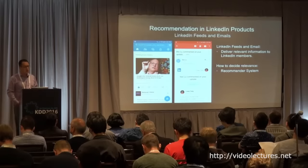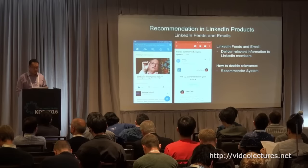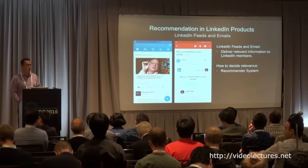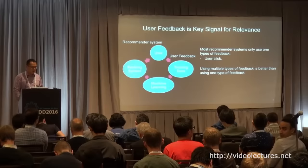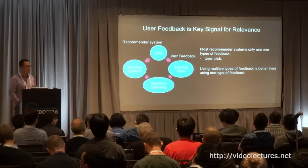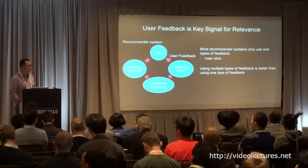Recommendation is part of the LinkedIn products. For example, here is the LinkedIn newsfeed and the LinkedIn email. The goal is to deliver relevant information to LinkedIn members. But how can we decide what is relevant and what is not? That's why we use a recommendation system. Here is a typical flow: we collect user feedback, learn the ground truth of relevance, train a machine learning model, deploy it into the ranking system, show results to the user, and then collect new feedback. That's the loop of how we build the recommendation system.